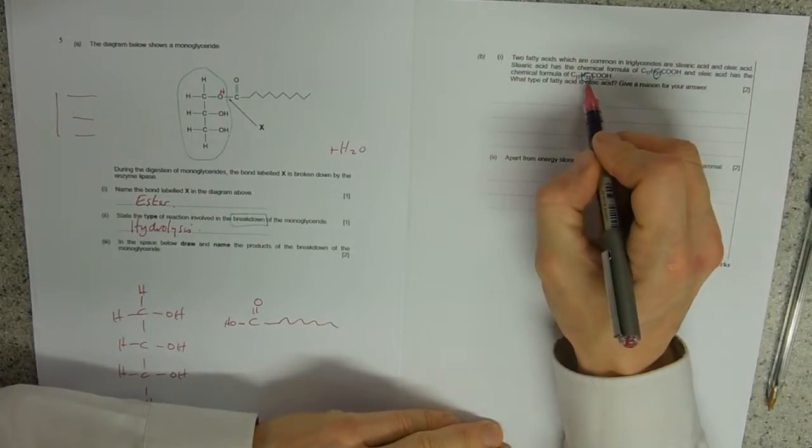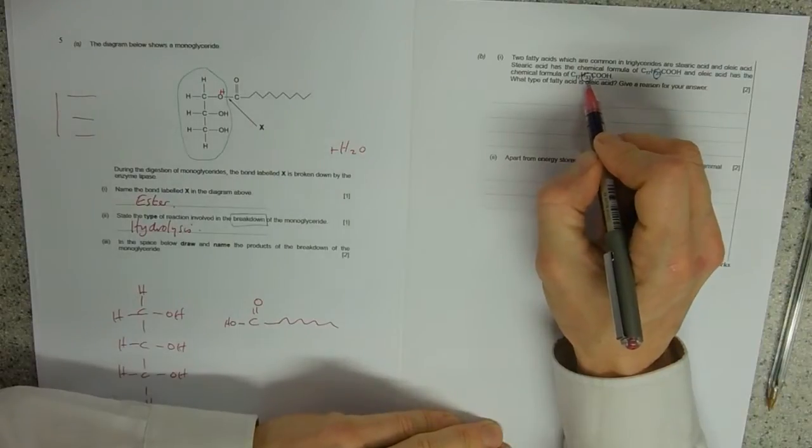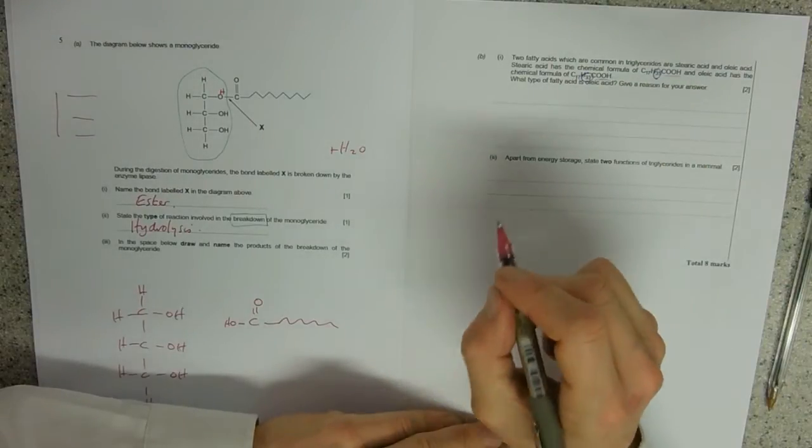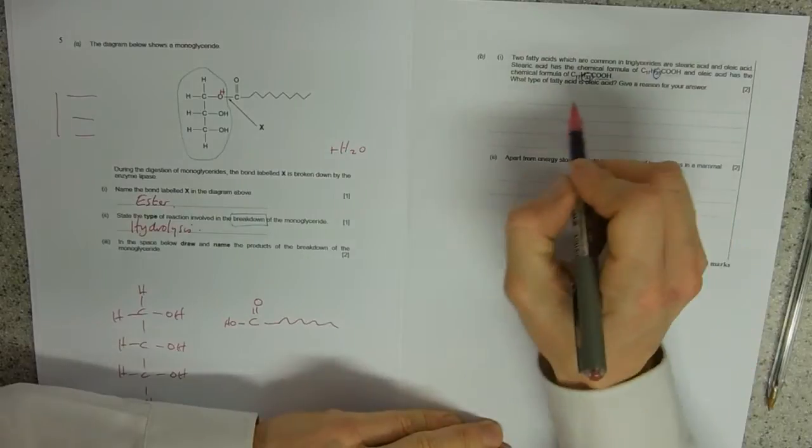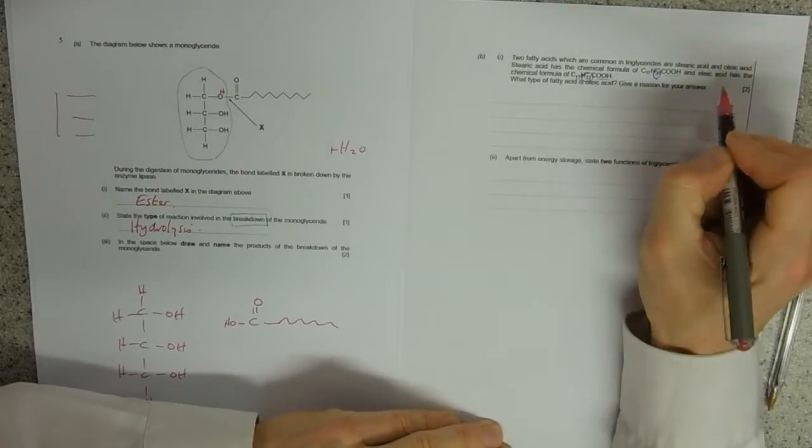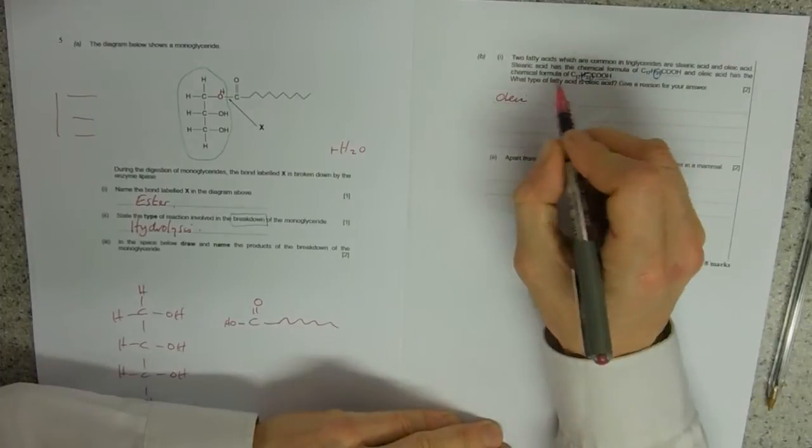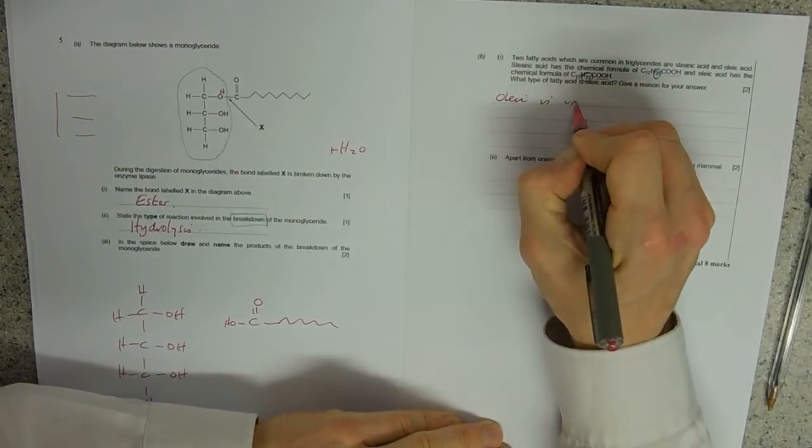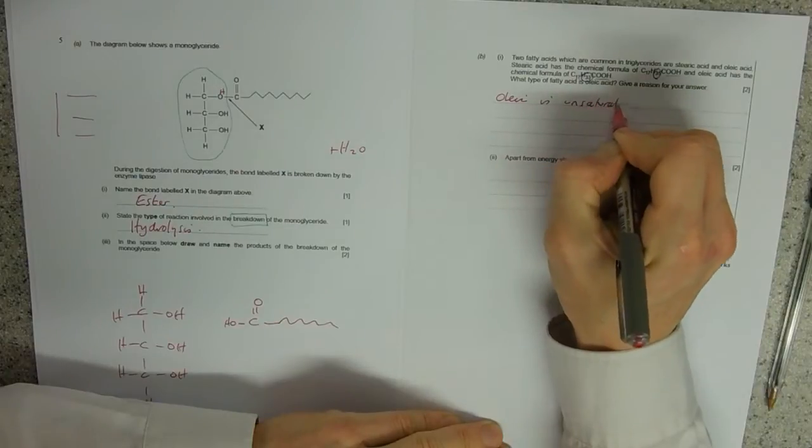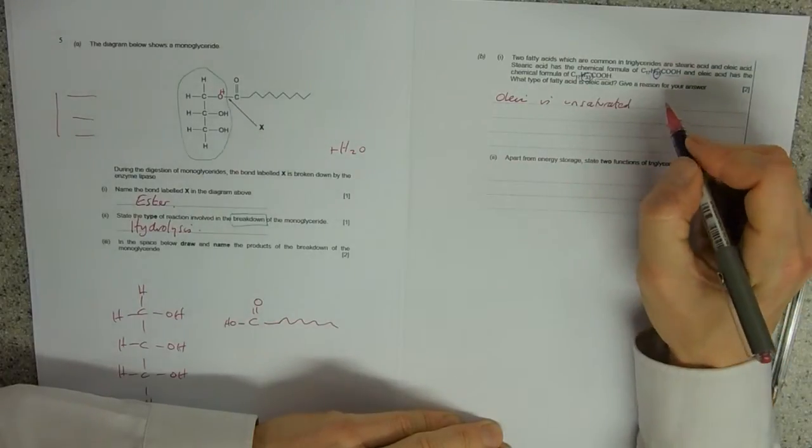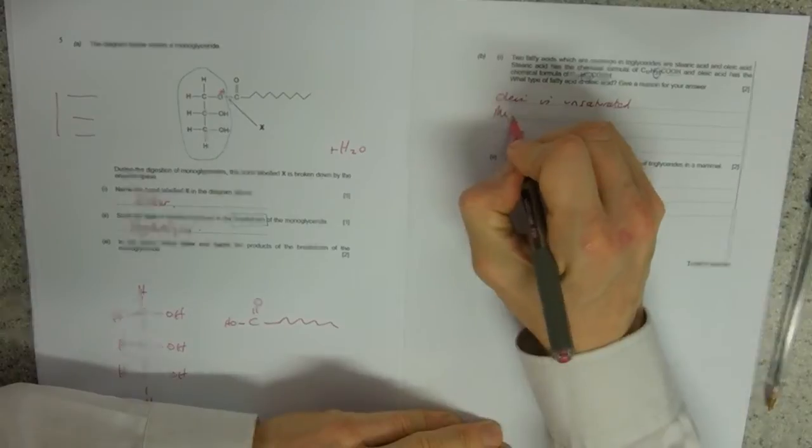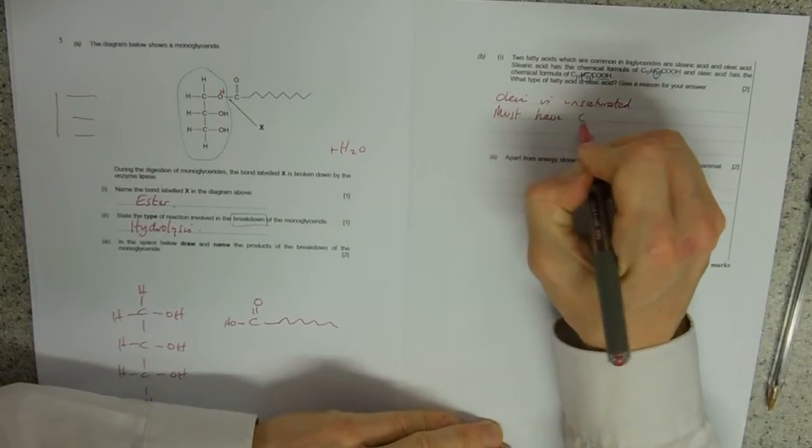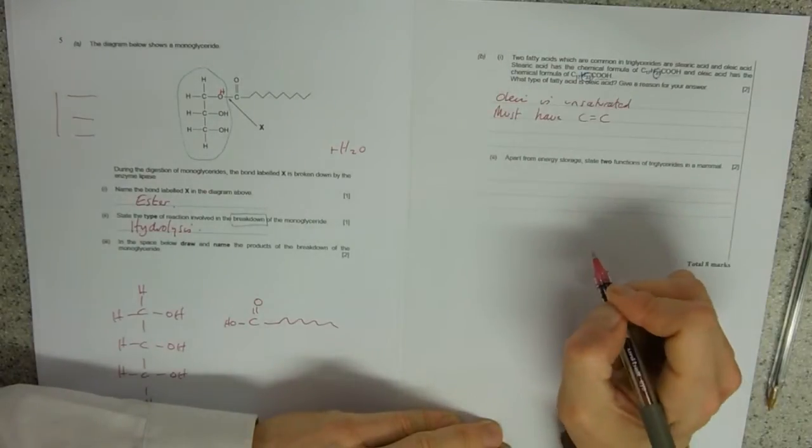So the one that's got less must have some carbon-to-carbon double bonds in there somewhere. So the oleic acid—oleic acid with less hydrogen is unsaturated. So you must have a carbon-to-carbon double bond.